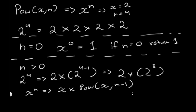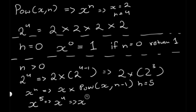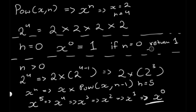So how is this actually going to work? Let's say we have an n value of 5. We start with x to the power of 5, then call x to the power of 4, then x to the power of 3, x to the power of 2, x to the power of 1, and finally x to the power of 0 — which returns 1, stopping any more recursive calls.